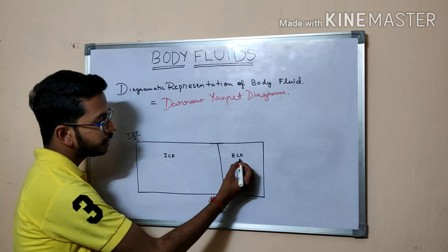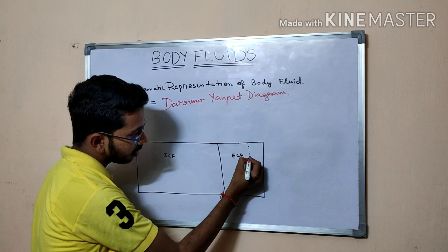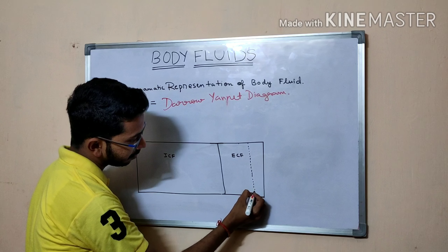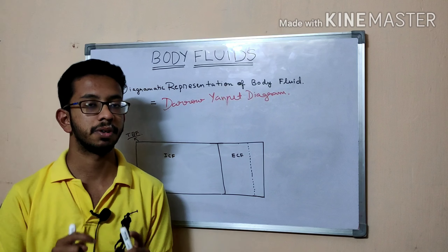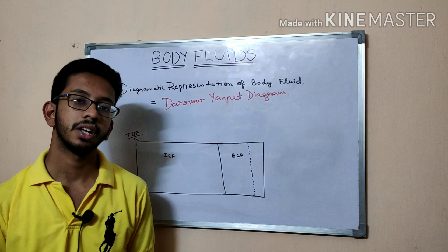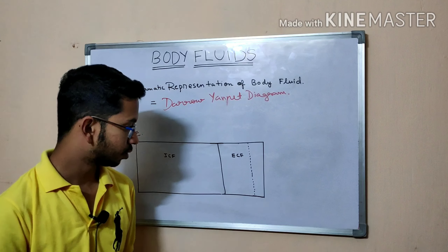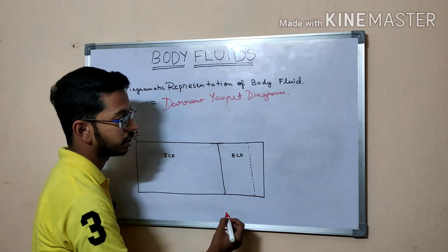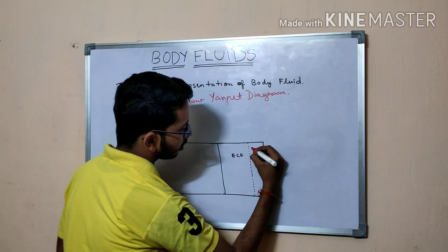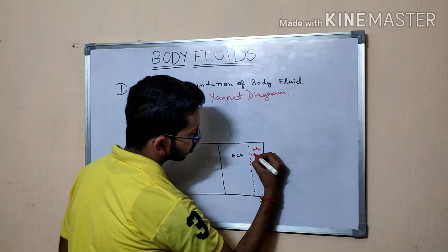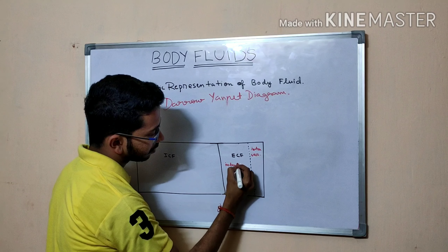Within the extracellular compartment, a dotted line divides it further into two compartments: the interstitial compartment and the intravascular compartment. The intravascular compartment is the smaller one, representing one-fourth of the total ECF, and the larger portion is the interstitial compartment.